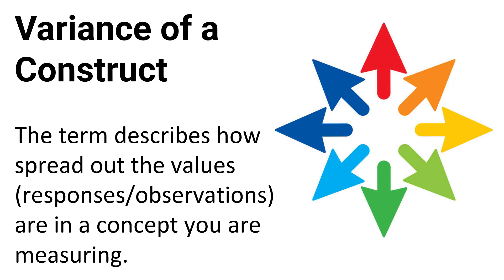Variance of a construct or a concept you're trying to measure is really just the term to describe how spread out these values are. So if you're doing a survey on a one-to-seven scale, are they all bunched around five, six, and seven? Are there a lot of ones and sevens and twos and sixes — are they really spread out, or are they all bunched up into one area? You need to understand how much variance is in the responses you're getting to a particular question.